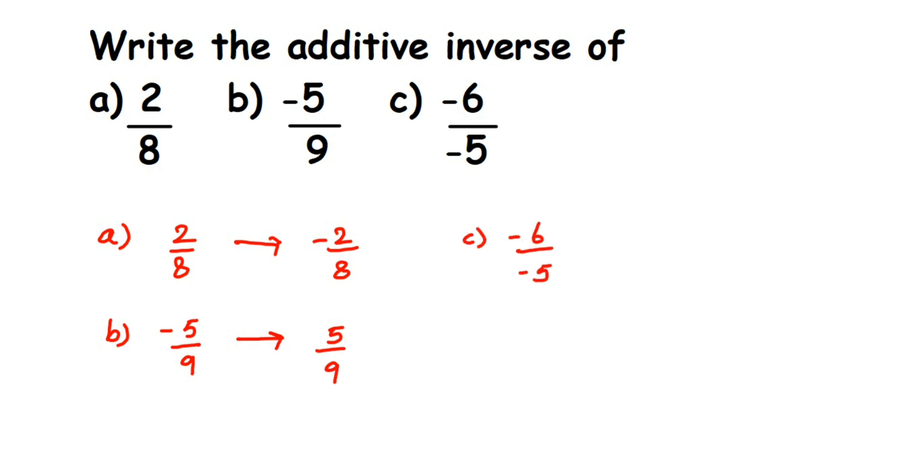The next question we have a negative sign both in the numerator and denominator. It's -6/-5. Cancel the negative signs, you will get 6/5. Now find the additive inverse. The whole number is positive, its additive inverse will be -6/5.